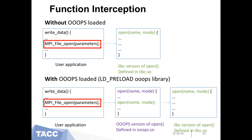Now I'm going to show you the function interception workflow in the OOPS program. Let us assume you have a parallel program implemented with MPI, with an MPI file open in your program. Under the layer, it will call the POSIX function open defined in the libc library. Without OOPS, the libc version of the open function will be used to complete this I/O work. But with OOPS loaded, the workflow will be intercepted. Once your program wants to call the open function, it will jump to an open function we defined in the OOPS library, which will evaluate the file system status and workload status, and introduce a proper delay if necessary.